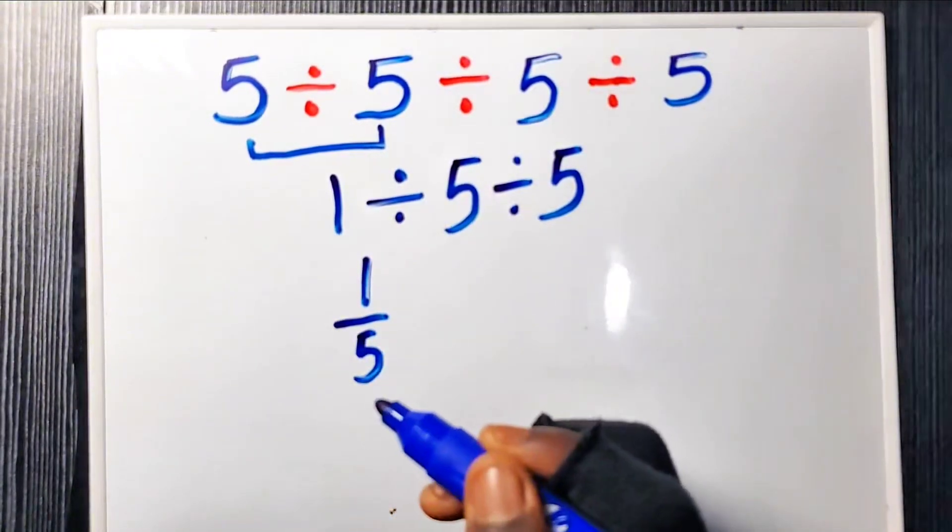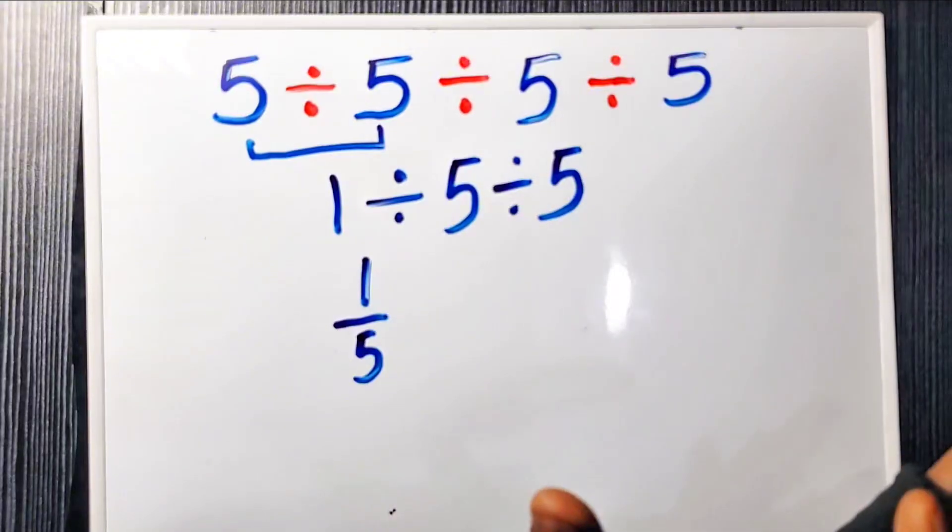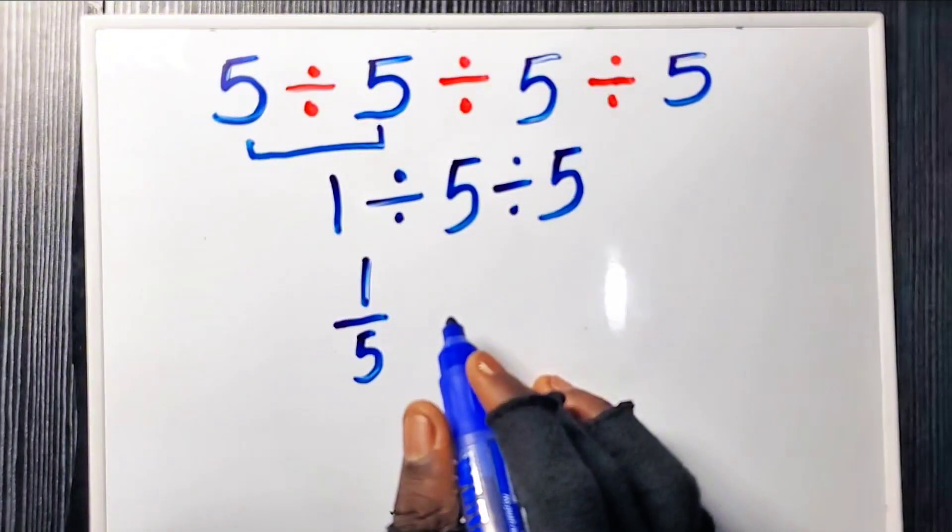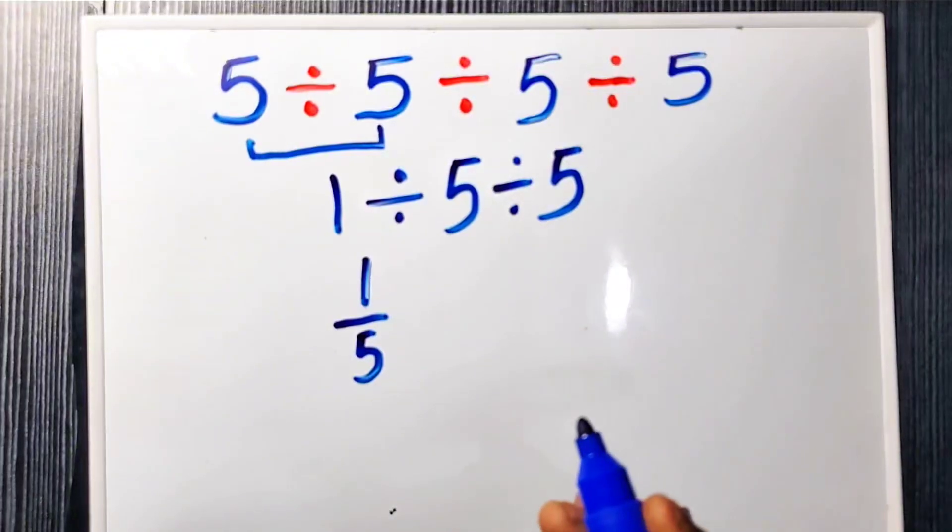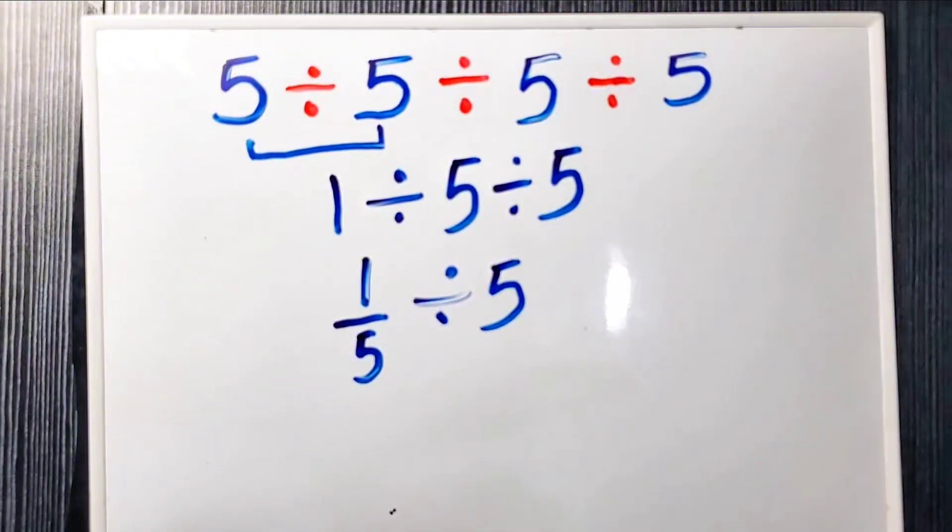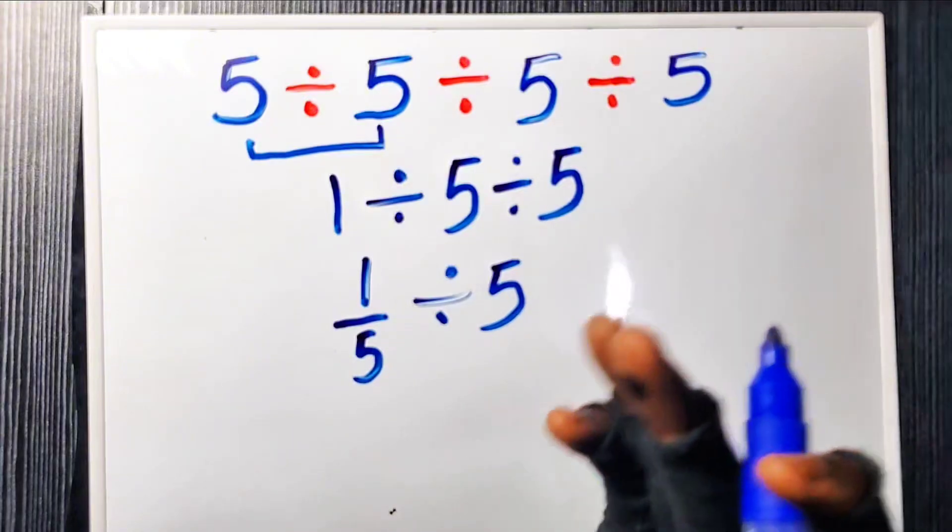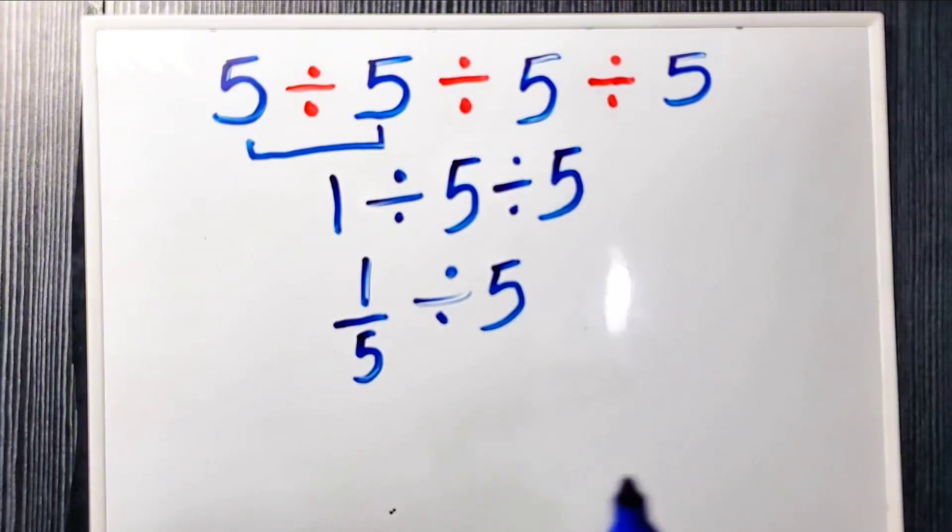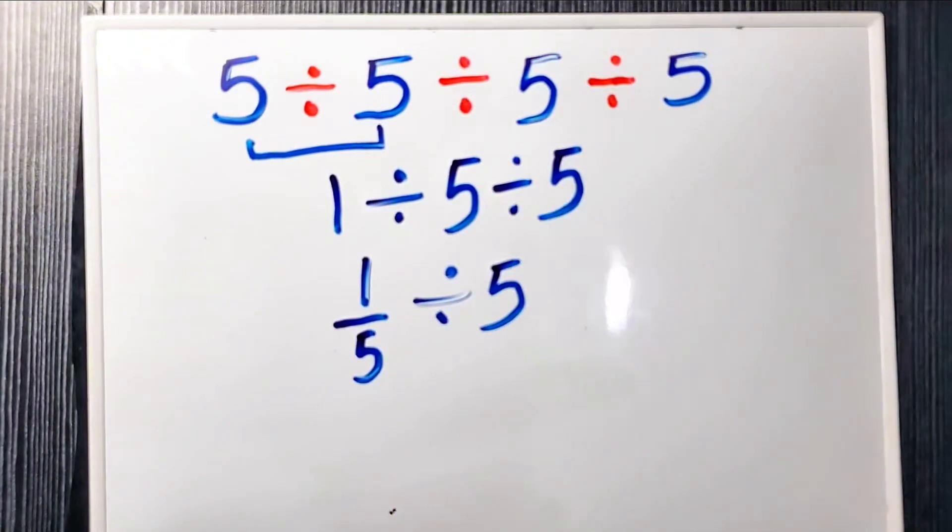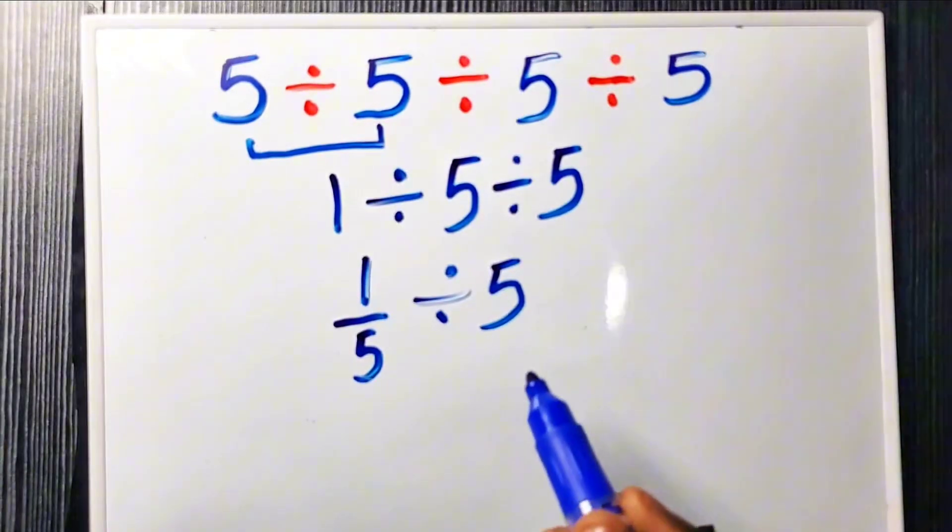Final step: one-fifth divided by five. Think of it like money. What is 20 cents divided by five people? It is four cents. One over five divided by five.